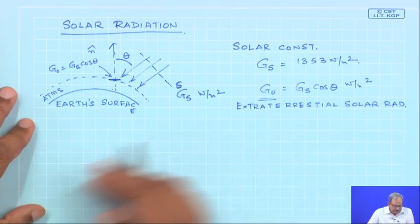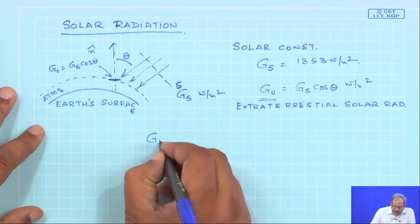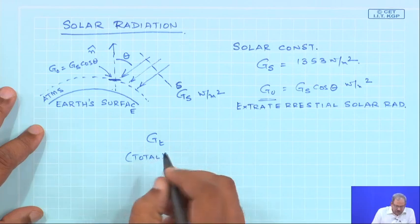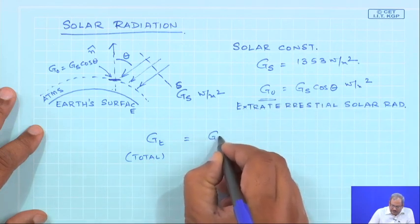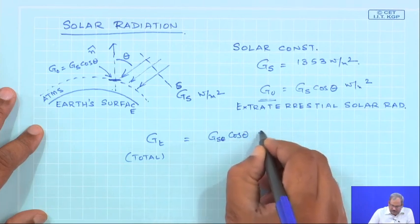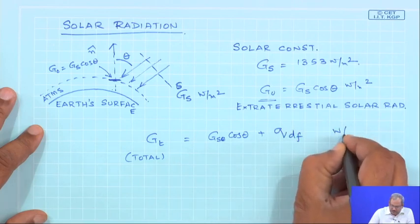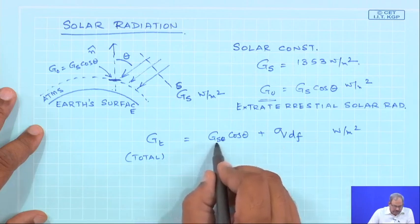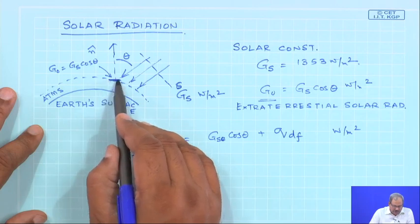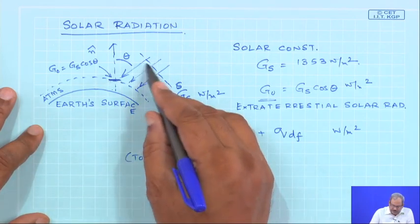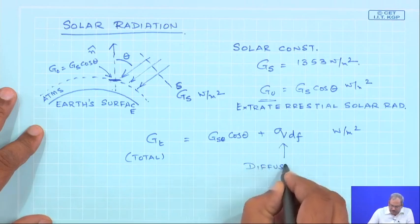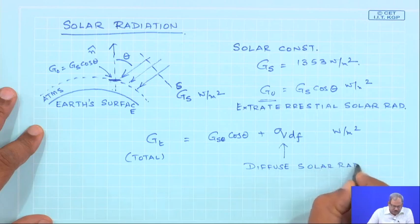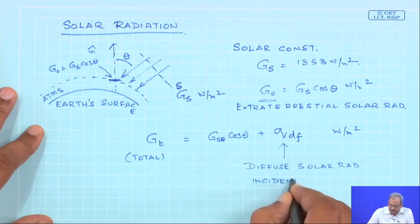The total radiative flux reaching the earth's surface from all directions over the sky is the sum of Gs·cosθ plus Qdf, all in W/m². Here Gs·cosθ is the direct solar radiative flux per unit area normal to the direction of the solar beam, and Qdf is the diffuse solar radiation incident on a horizontal surface.